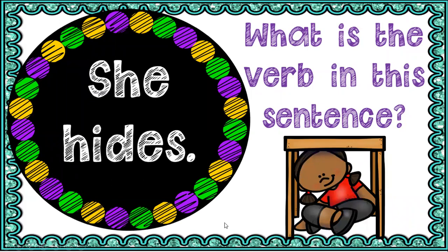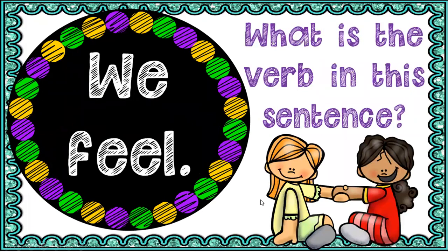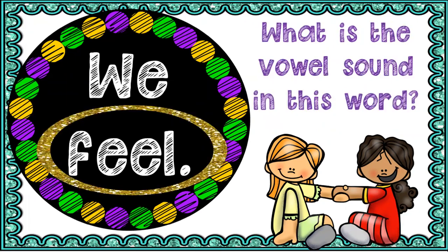What is your verb in this sentence? 'She hides' — so your predicate or verb would be 'hides,' it's your action word. Now what's your vowel sound in this word? This would be your long 'i' because of your 'i-consonant-e.' And the next one — we feel — what's your verb? 'Feel.' So that's your action or your predicate.